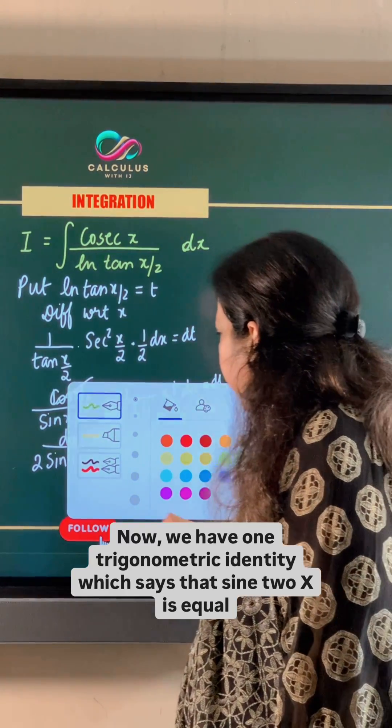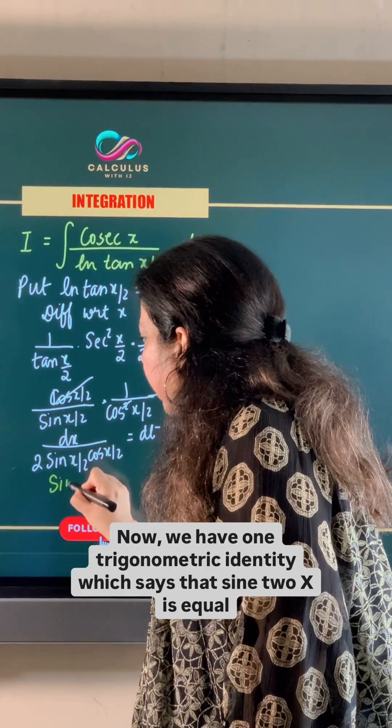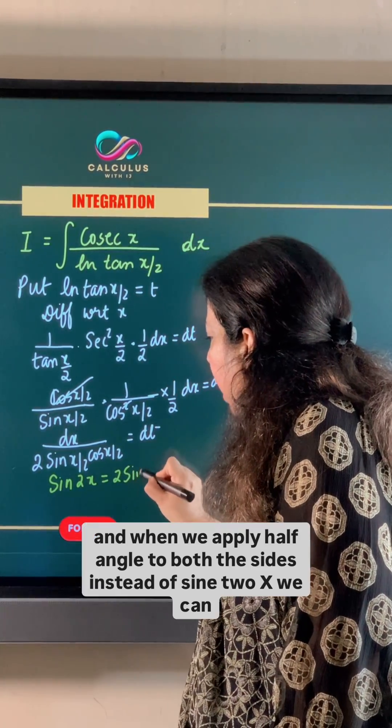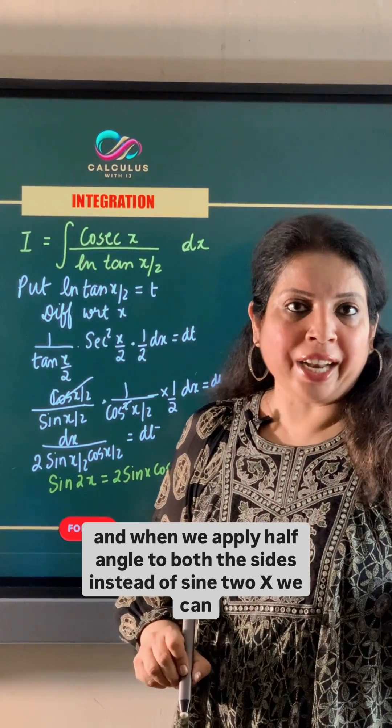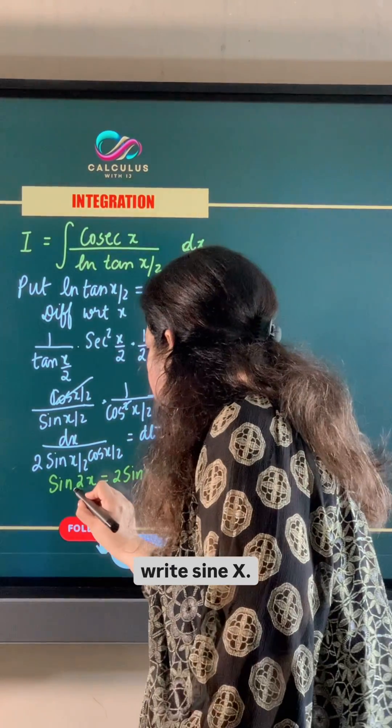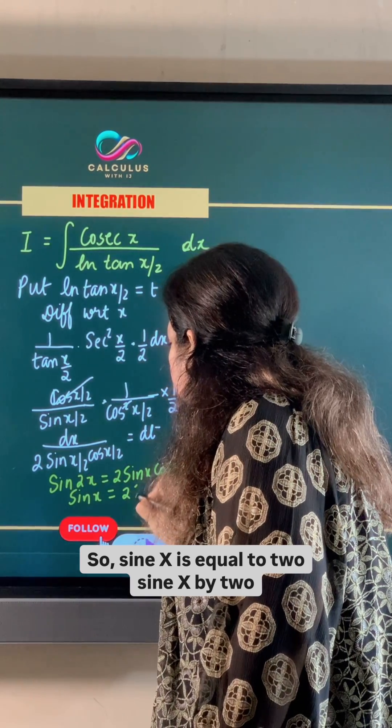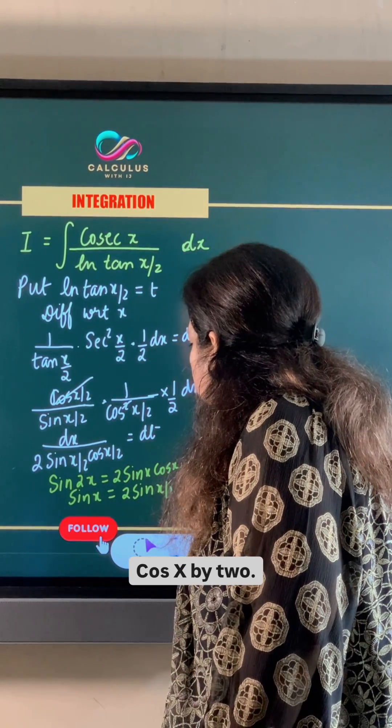Now we have one trigonometric identity which says that sin 2x is equal to 2 sin x cos x. And when we apply half angle to both the sides, instead of sin 2x, we can write sin x. So sin x is equal to 2 sin x by 2 cos x by 2.